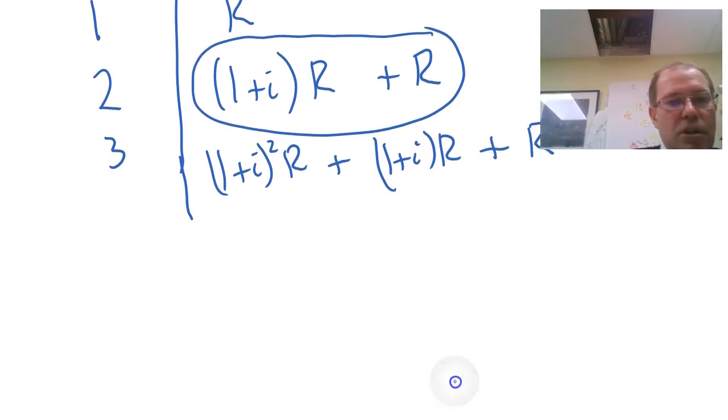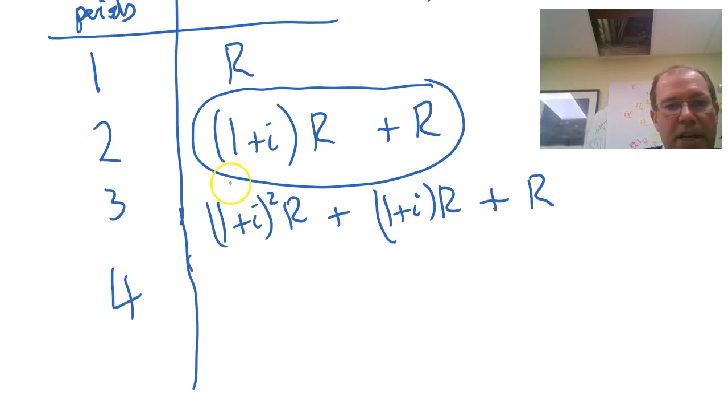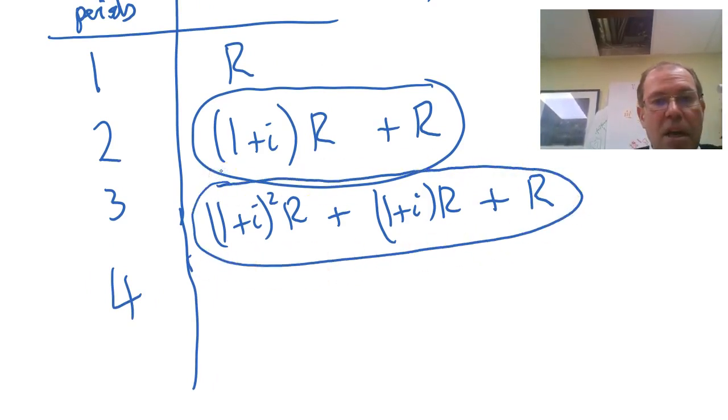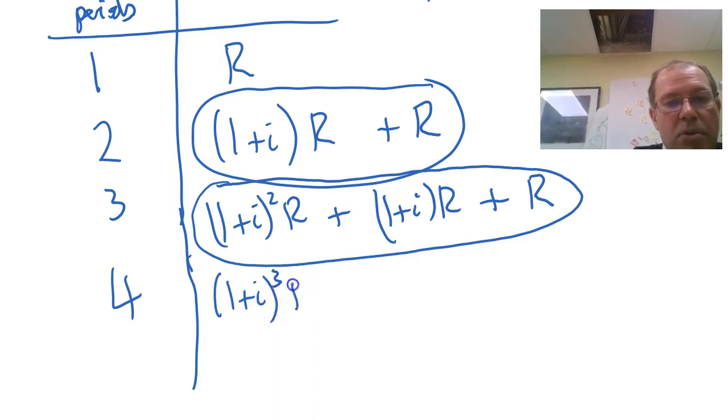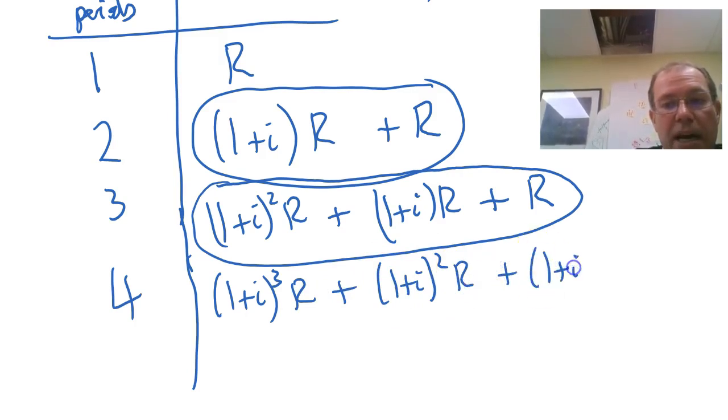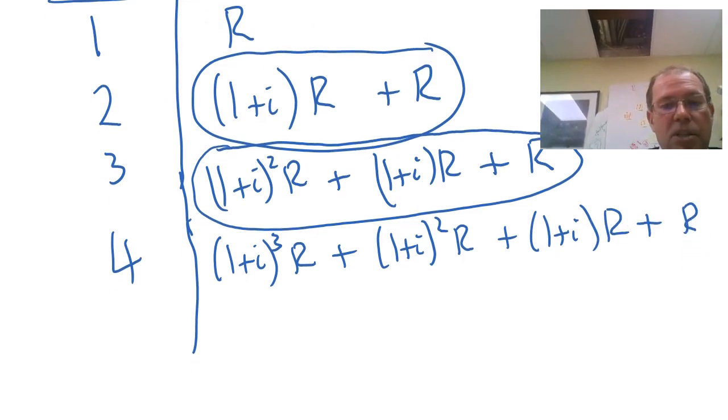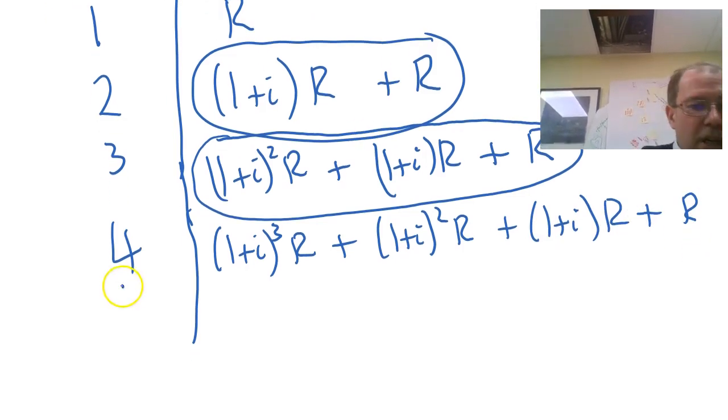And then if we do 4, we can see I now need to take all of the next term here. That's how much I've got after three periods. And I need to increase that by my multiplying factor 1 plus i. So it's going to be 1 plus i cubed times R plus 1 plus i squared times R plus 1 plus i times R, and then plus my regular payment R. So we can see there, if we go to N, we do have a geometric series.